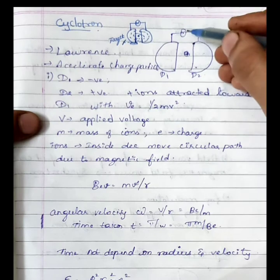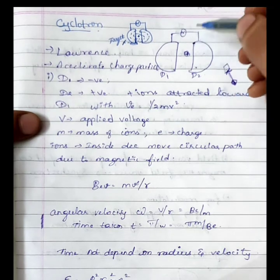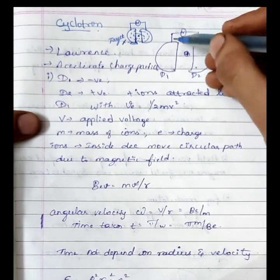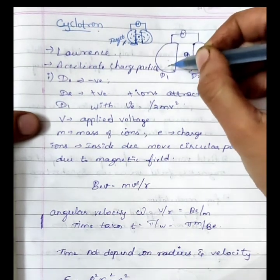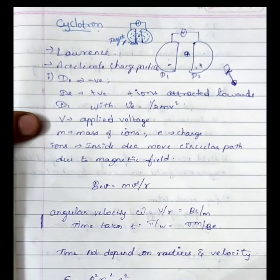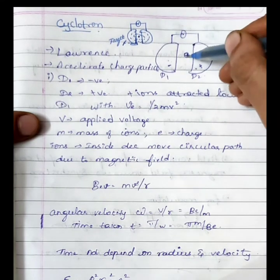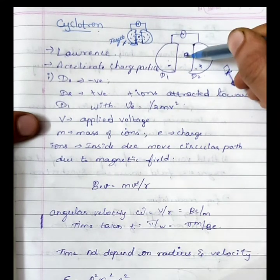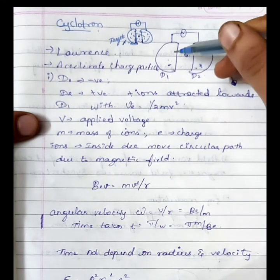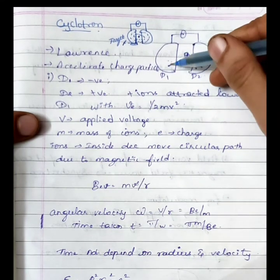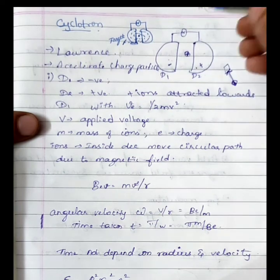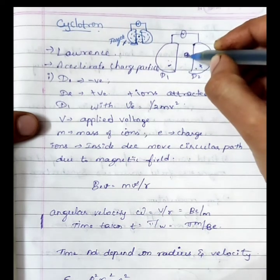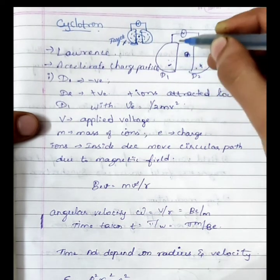First, the polarity: D1 is negative and D2 is positive. Since D1 is negative, it will attract the opposite ions. So the positive ions are attracted toward the negative D1.